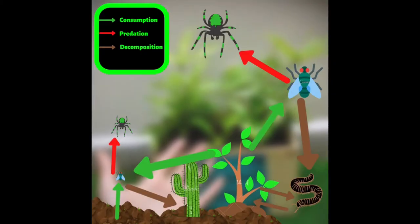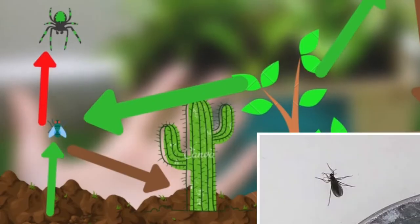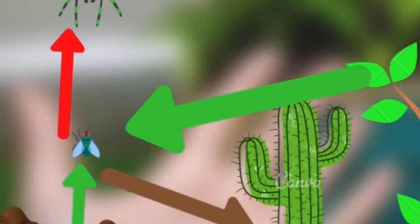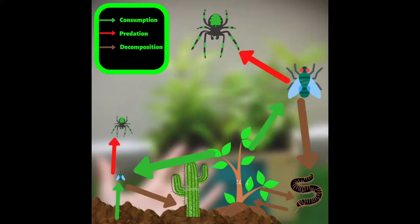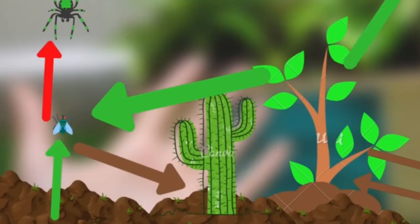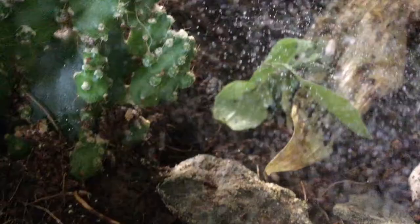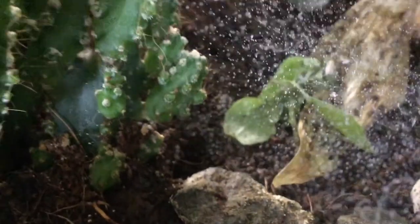Let's start with what the spiderlings eat. Tiny little flies, which got nutrition from soil and plants, went into the Sheetweb Spider's webs. Then the leftovers of the tiny little flies go to the plants on which the spiders make their webs.